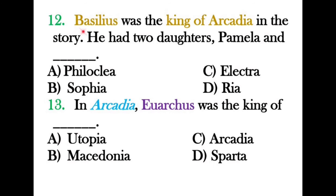Question twelve: Basilius was the king of Arcadia in the story. He had two daughters. The correct answer is Philoclea — the names of his two daughters were Pamela and Philoclea.